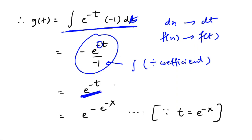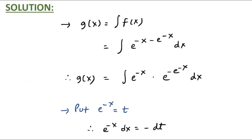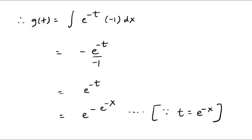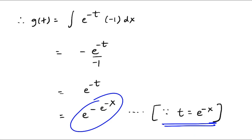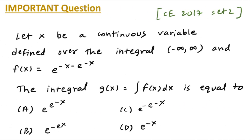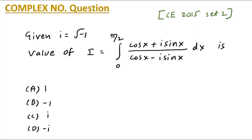This is not the final answer — it is a partial answer. You have to do the re-substitution: since e raised to minus x equals t, substitute back so t becomes e raised to minus x. The final answer is e raised to minus(e raised to minus x). Looking at the options, option c is absolutely correct.